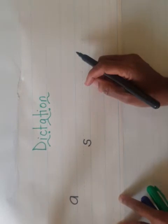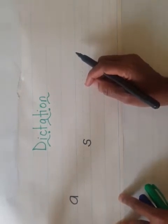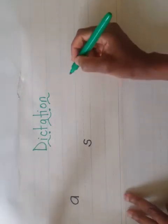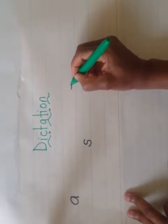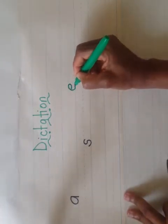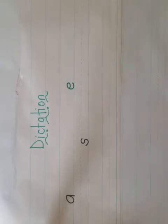We write in small letters. Write the letter that makes the 'eh' sound. Which letter says 'eh'? E says 'eh', so you write E. This is how we write an E: go around and down.